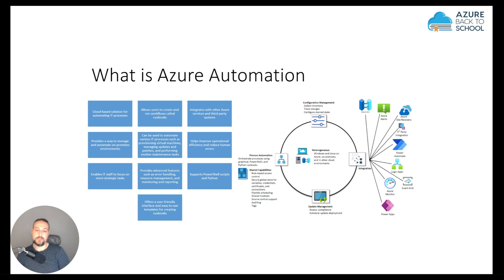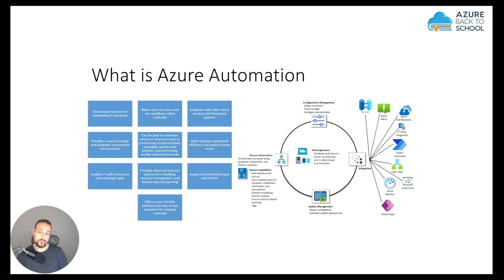So, what is Azure Automation? Azure Automation delivers cloud-based automation, operating system updates, and a configuration service that supports consistent management across your Azure and also non-Azure environments. It includes process automation, configuration management, update management, shared capabilities, and different features you can use for your environment. This service also has the ability to connect to other services.